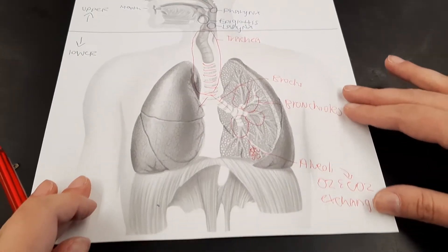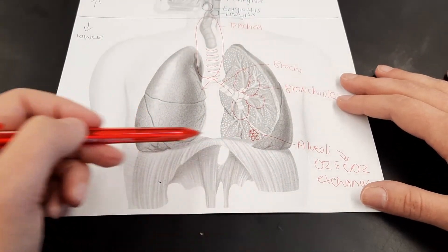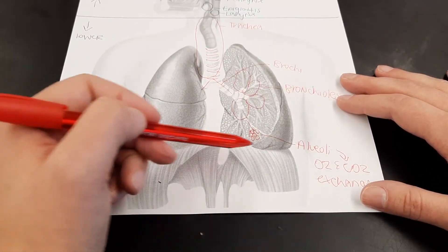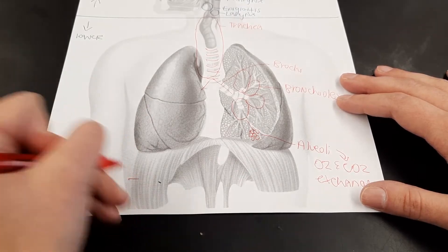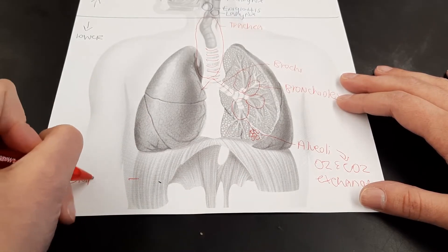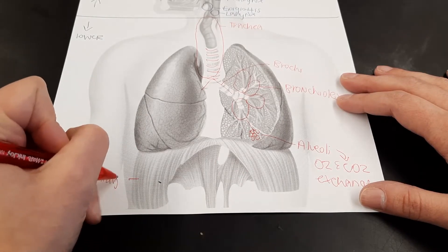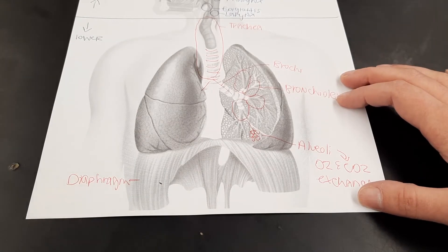The last structure of our lower respiratory system is this muscle here. This muscle is our diaphragm, and it will contract and relax in order to help us breathe.